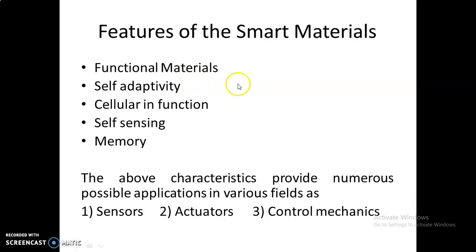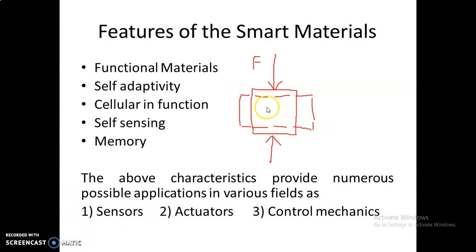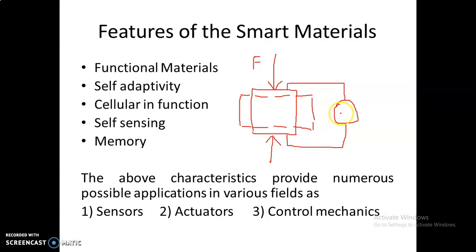Functional materials may be explained by some examples. If you apply a force on a traditional material, there will be a deformation — a mechanical deformation, meaning there will be strain. In the case of smart materials, it will not be only strain. There will be something more — there may be some electricity. The mechanical deformation may generate some electricity, known as piezoelectricity. This behavior is known as smartness. The material is known as a functional material.